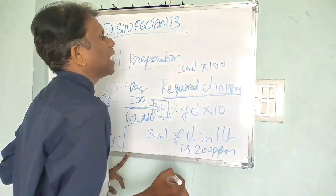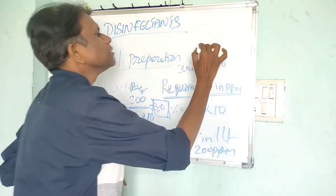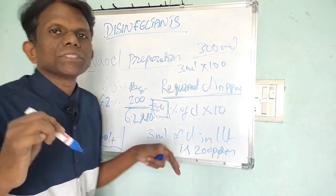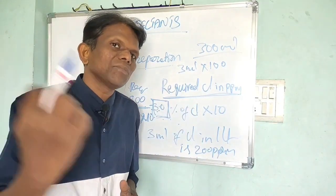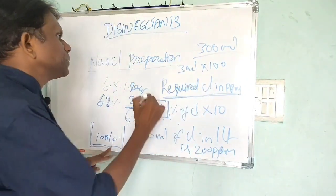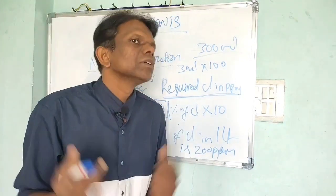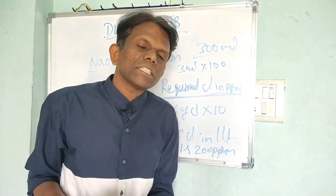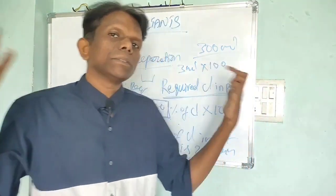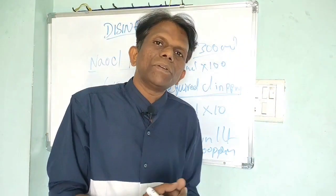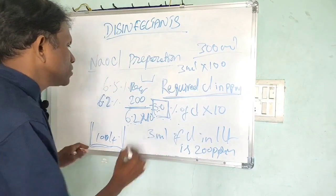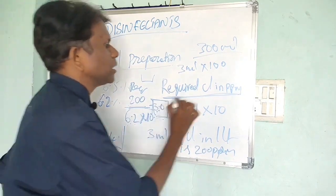For 100 litres of water, simply multiply: 3 ml × 100 = 300 ml of chlorine to be added to 100 litres of water to give a 200 ppm chlorine solution to disinfect the floor. Using this formula we can prepare chlorination charts for food dips, hand washing, floor disinfection, and utensil disinfection. Wet processing and meat processing industries maintain 50 ppm for utensil washing and food contact surfaces, and around 200 ppm for floor washing.